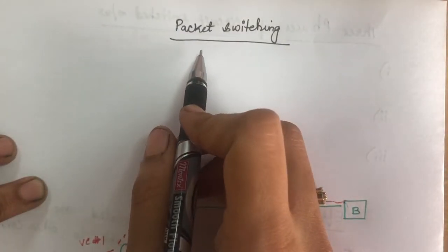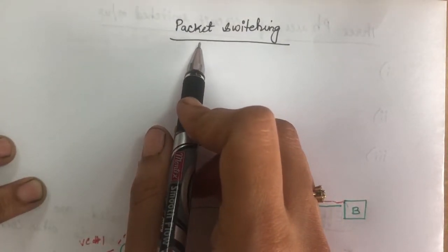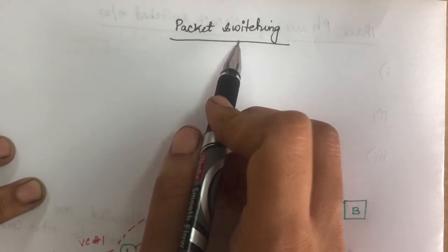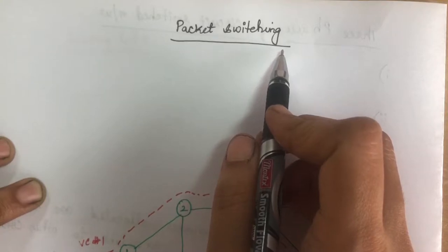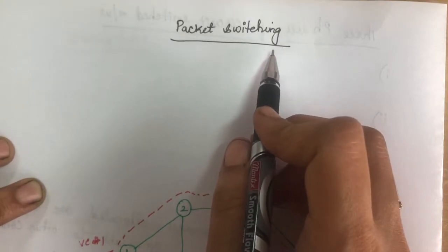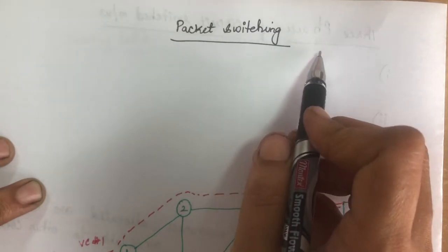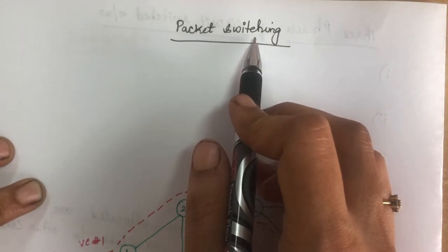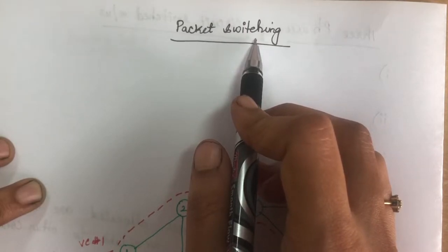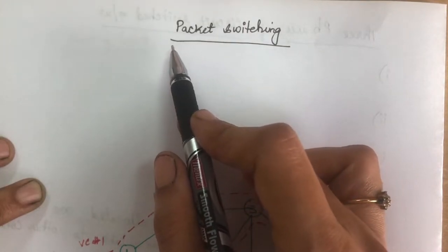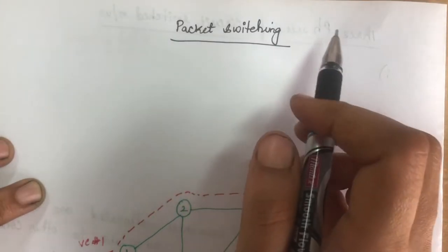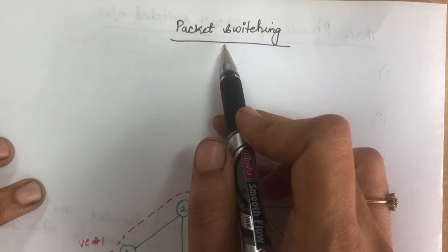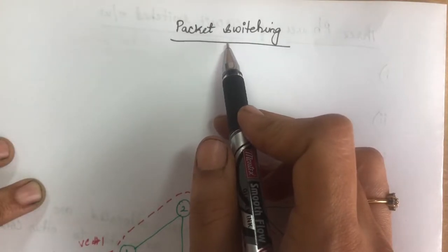Hello students. Now we will see the topic called packet switching. Switching is a device capable of creating a temporary connection between two devices. When we want to establish a temporary connection between two devices, we can go for switching. Switching is divided into three types: circuit switching, packet switching, and message switching. In the last video we already saw circuit switching, so in this video we are going to discuss packet switching.